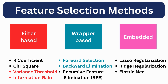We have already discussed R coefficient and chi-square in the correlation analysis video. In this video, we will explore two filter-based methods including variance threshold and information gain. We will also discuss two wrapper-based methods: forward selection and backward elimination.